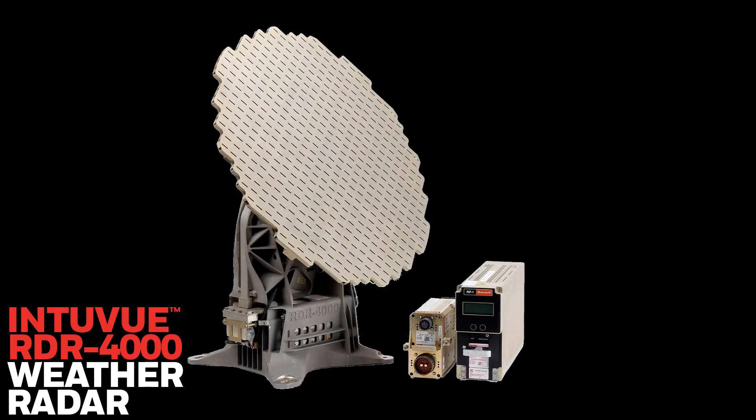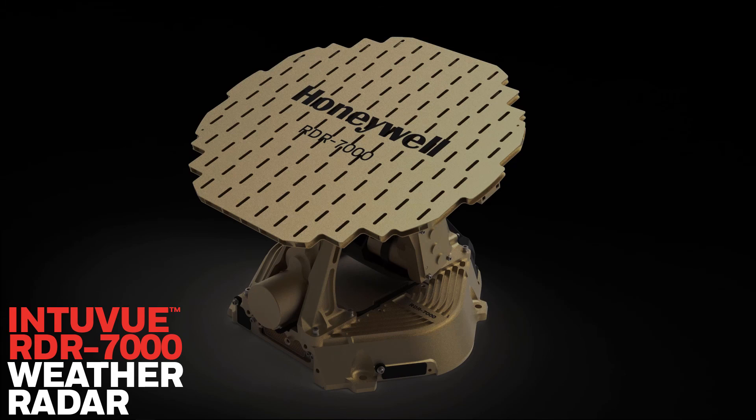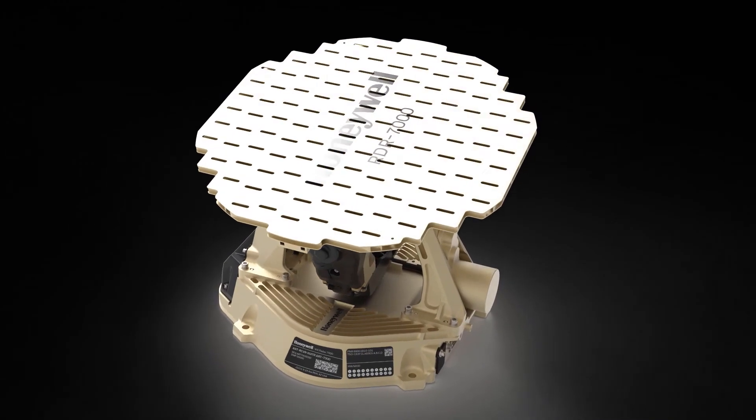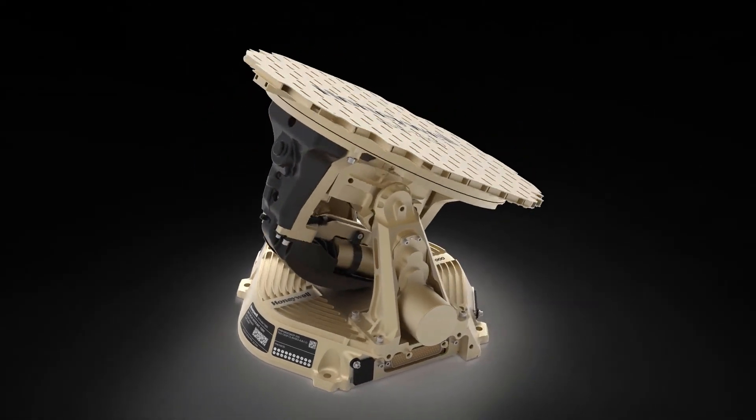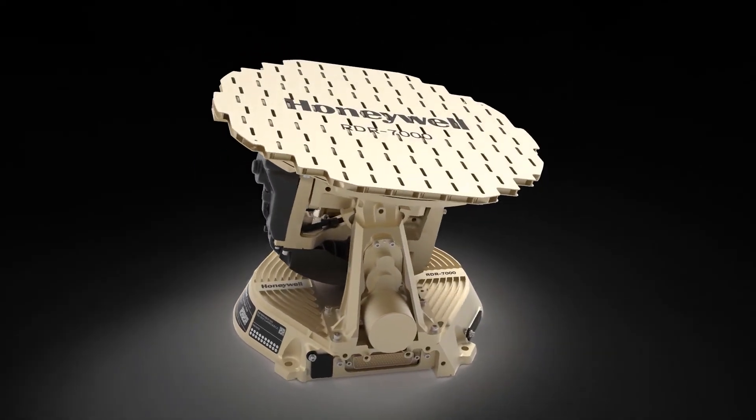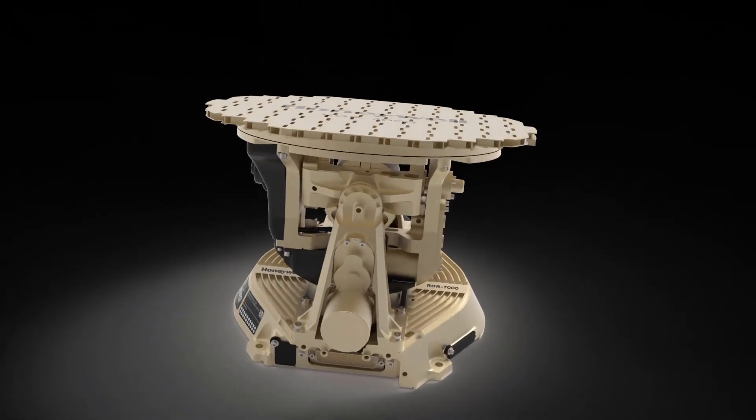All radar systems can detect weather. The RDR 4000 and 7000 don't stop there. They also provide tools allowing you to analyze the weather to determine a safe deviation path for avoidance. In future Honeywell Quick Topic videos, we'll look at uses of the vertical profile mode for weather analysis.